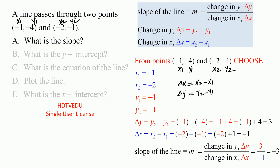What is delta y? Delta y is y2 minus y1. y2 is negative 1, and y1 is negative 4. So negative 1 minus negative 4 is the same as negative 1 plus 4, because negative of negative 4 is positive. So you get negative 1 plus 4, which equals 3.